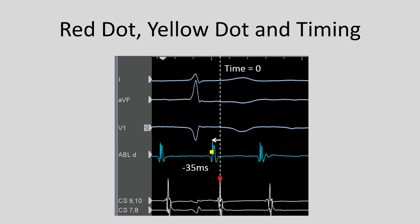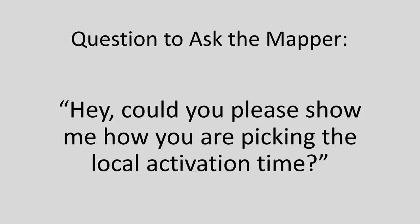The comparison of timing between the red reference dot and the yellow local activation time dot gives you information about each spot in the chamber when mapping during tachycardia. It's very acceptable during the procedure to ask your mapping expert: could you please show me how you're deciding to pick the local activation time? This is a matter of some debate — some people use the beginning, some the peak, some the sharpest deflection of the electrogram — but you need to be consistent during your map to compare apples to apples.